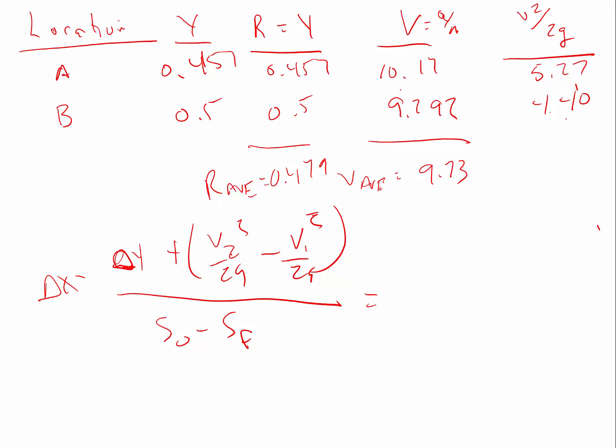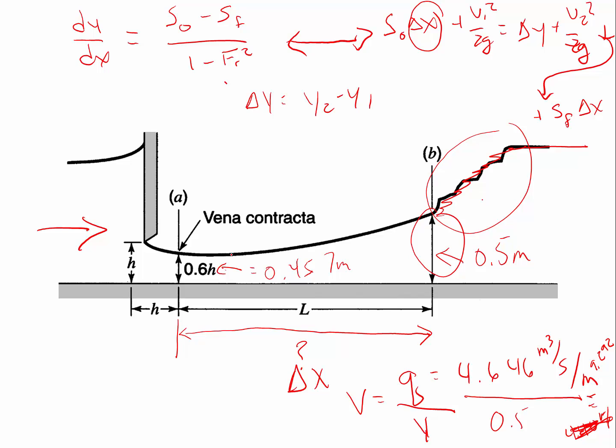You can see that I've got a delta y of 0.5 minus 0.457 plus, and then my v2 squared over 2g is 5.27 minus 4.4 divided by s sub o, which is 0.0003 minus 0.101. So when I come up with a delta x equal to 8.21 meters.